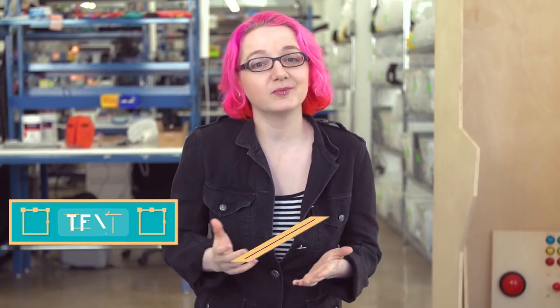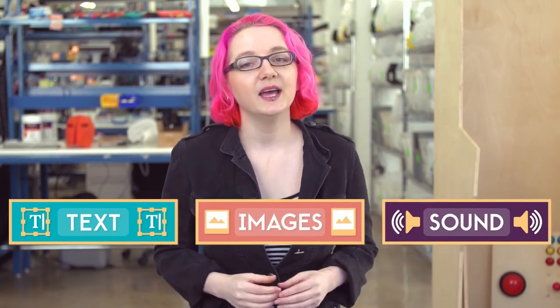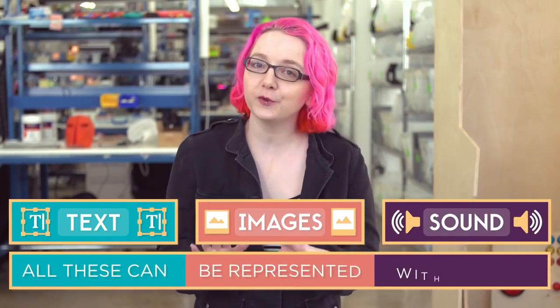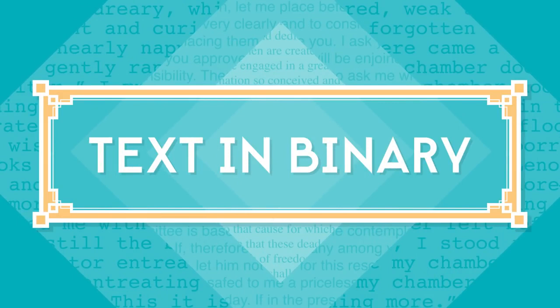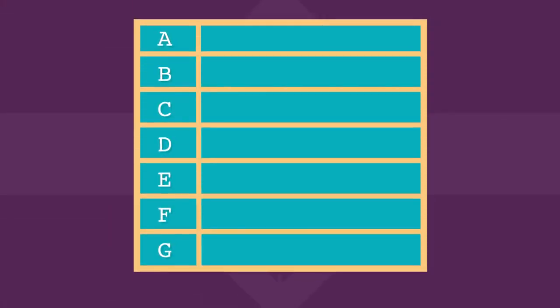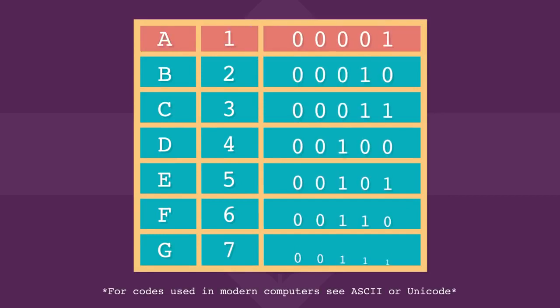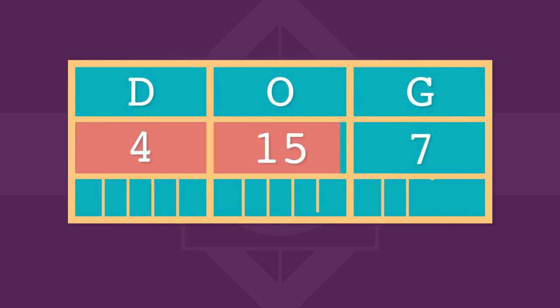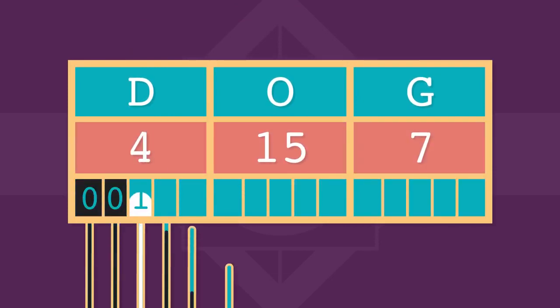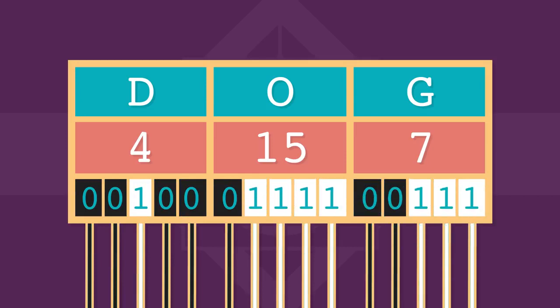Using the binary number system, you can represent any number you like. But what about other types of information, like text, images, or sound? It turns out that all these things can also be represented with numbers. Think of all the letters in the alphabet — you could assign a number to each letter. A could be one, B could be two, and so on. You can then represent any word or paragraph as a sequence of numbers, and as we saw, these numbers can be stored as on or off electrical signals. Every word you see on every webpage on your phone is represented using a system like this.